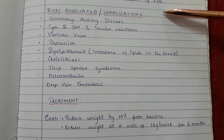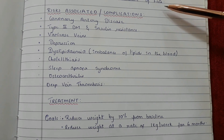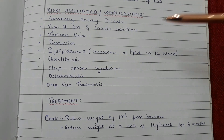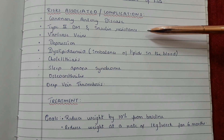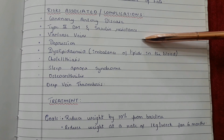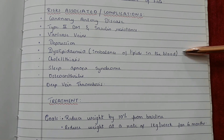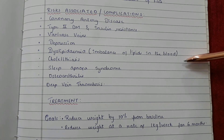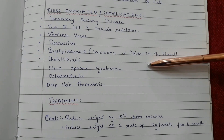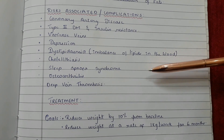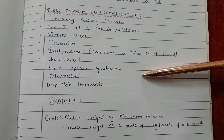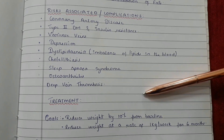Risk factors or complications of obesity include coronary artery disease, type 2 diabetes mellitus and insulin resistance, varicose veins, depression, dyslipidemia which means an imbalance of lipids in the blood, cholelithiasis, sleep apnea syndrome, osteoarthritis — that is degeneration of joints — and deep vein thrombosis.